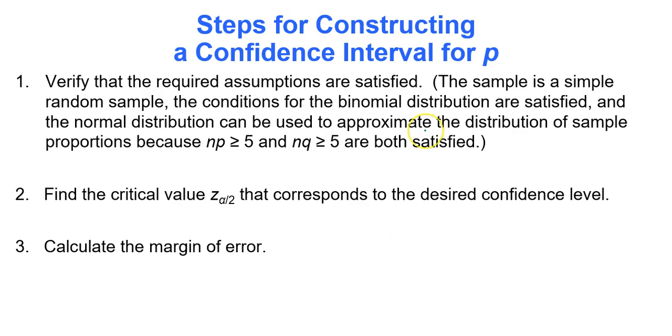The first step is to verify that the required assumptions are satisfied. In order for us to be able to use the methods we're about to use, the sample must be a simple random sample, the conditions for the binomial distribution must be satisfied, and the normal distribution can be used to approximate the distribution of sample proportions because there are at least five observations and at least five non-observations.